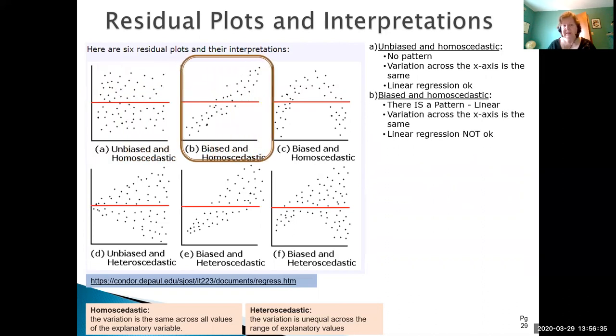For our b example this is biased and homoscedastic. Biased meaning that there is a pattern. It looks like some kind of straight line pattern. The variation along the x-axis seems to be pretty consistent. That means homoscedastic. But again because of this bias this pattern linear regression is not appropriate.